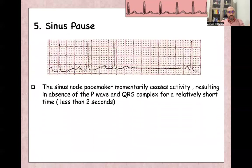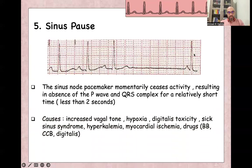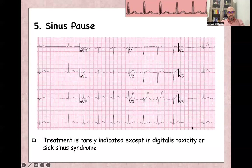Sinus pause means that the sinus node pacemaker momentarily ceases activity, resulting in absence of P-wave for less than two seconds. You can see normal P-waves followed by QRS, then there is no P-wave and no QRS for almost two seconds, then P-wave and QRS are restored. There are many causes for sinus pause, like increased vagal tone, hypoxia, digitalis toxicity, sick sinus syndrome, hyperkalemia, myocardial ischemia, and drugs like beta blockers, calcium channel blockers, and digitalis.